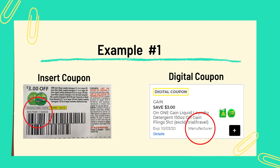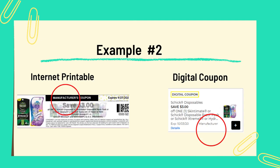Here's example number two. We have an internet printable and also a digital coupon — yes, both are for the same item and the same value. But an internet printable is still a manufacturer's coupon, so you cannot stack it with a digital coupon. The only time you can stack coupons at Dollar General is if one of them is a store coupon.